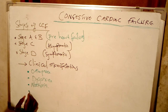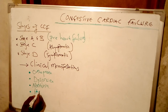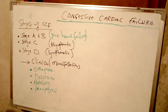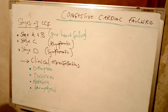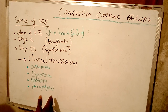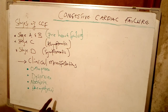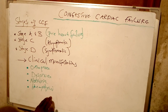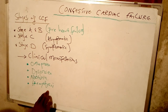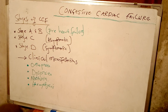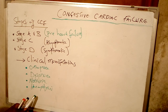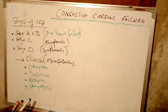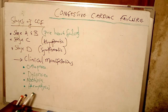There will also be hemoptysis, which is coughing out blood. This occurs because of pulmonary congestion, which leads to rupture of small blood vessels in the lungs, resulting in the patient coughing out blood.